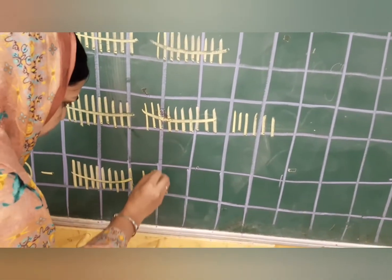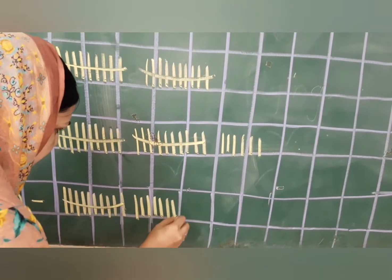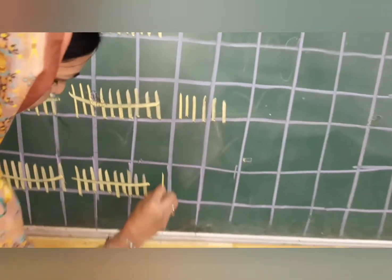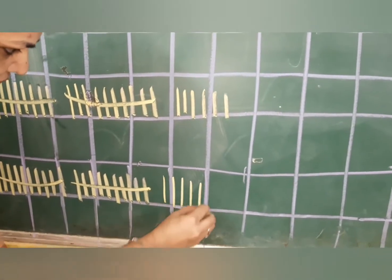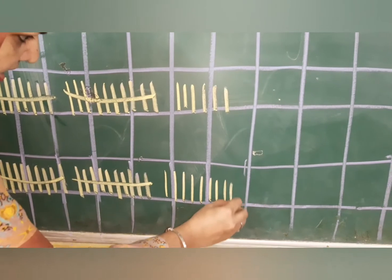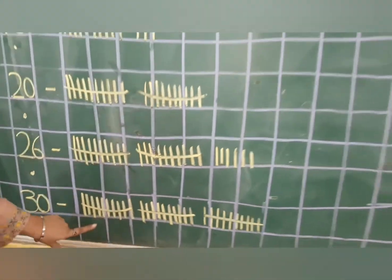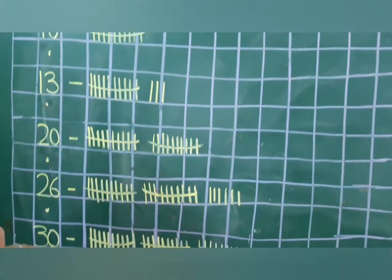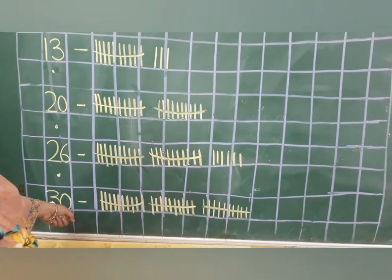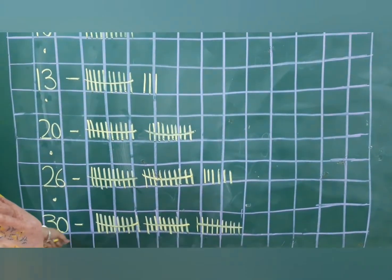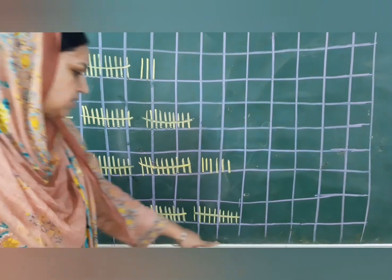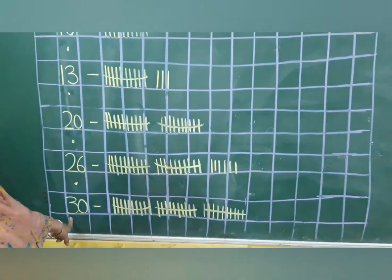We will tie it. Again give one finger space and count ten more sticks, tie it. Again give one finger space and count ten more sticks. So how many bundles do I have? One, two and three. Three bundles and here is a zero — zero means nothing. So we are not going to draw any loose sticks. Three bundles is equal to thirty.